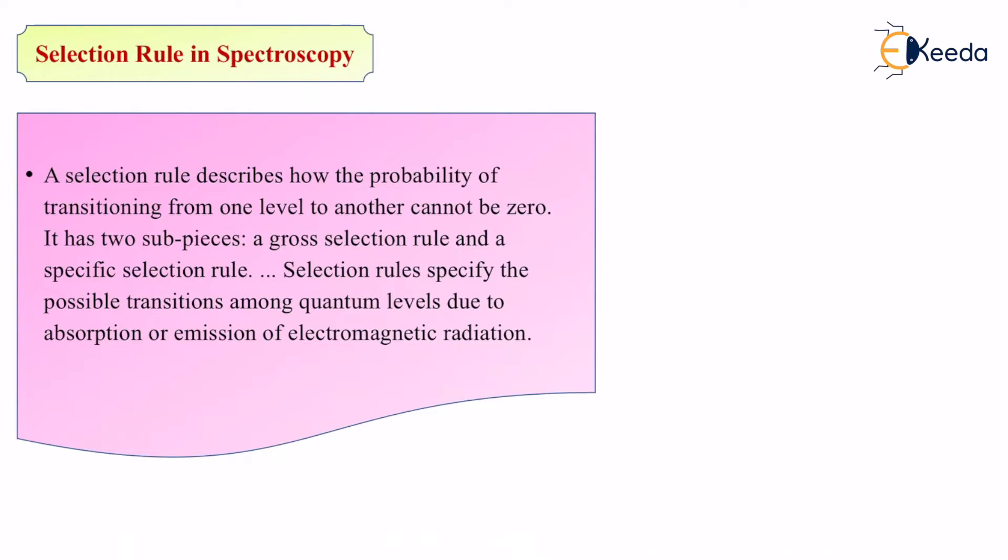The gross selection rule - the name gross means vague or general. You can classify the spectrums according to general characteristics. In general, certain spectrums show certain characteristics, while other spectrums show different characteristics. You can divide or subcategorize them based on these general traits.